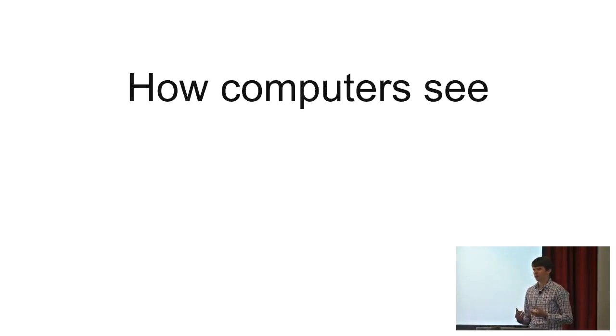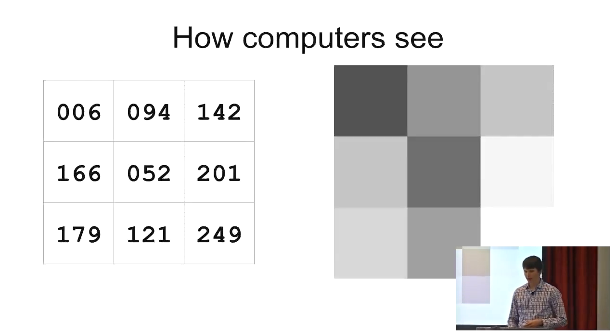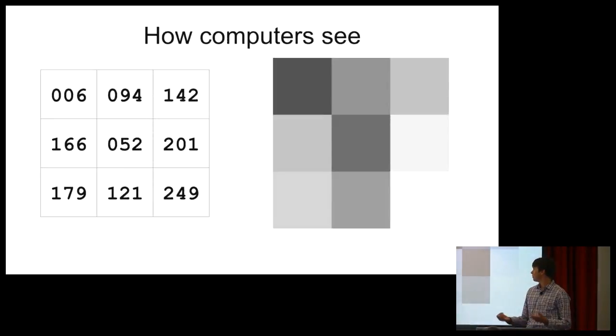First, we have to take a little detour into how computers actually see. Raster images are stored often as a two-dimensional matrix. Usually you get eight bits per pixel, zero being pure black and 255 being pure white. The darker your pixel, the darker your value. This is a single channel image, grayscale. You're not restricted to one channel, though.